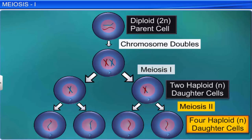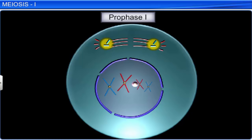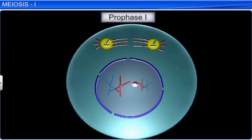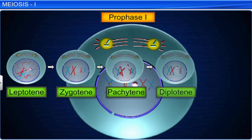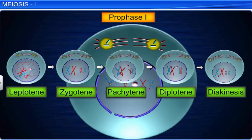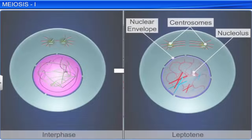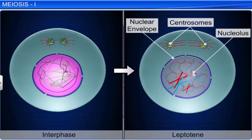Meiosis 1 begins with prophase 1, which is typically more complex and lasts longer compared to the prophase of mitosis. Based on chromosomal behavior, prophase 1 is divided into five phases: leptotene, zygotene, pachytene, diplotene, and diakinesis. During the leptotene stage, compaction of chromosomes continues and they gradually become visible under a microscope. As the DNA has already duplicated, each chromosome consists of two chromatids.